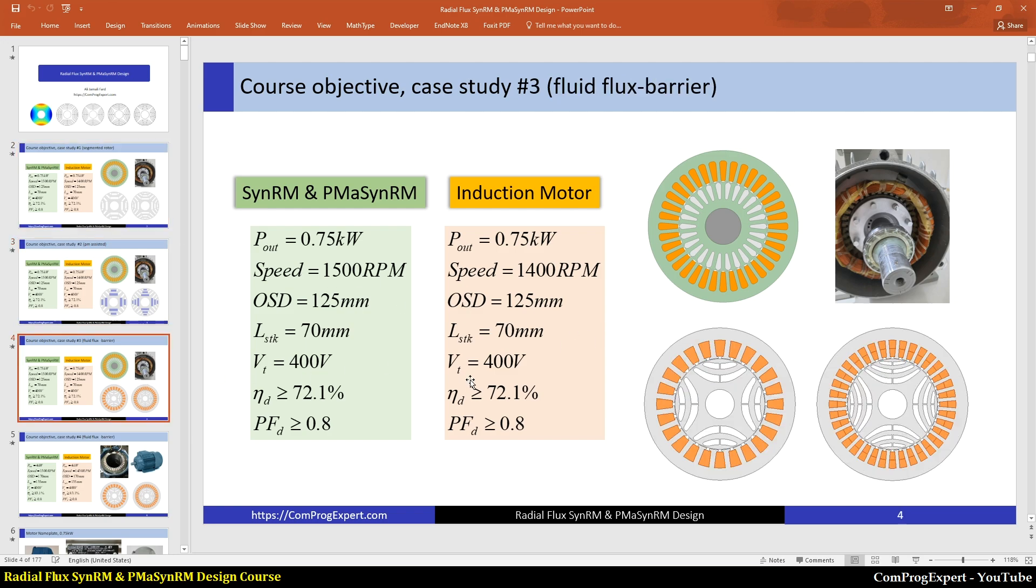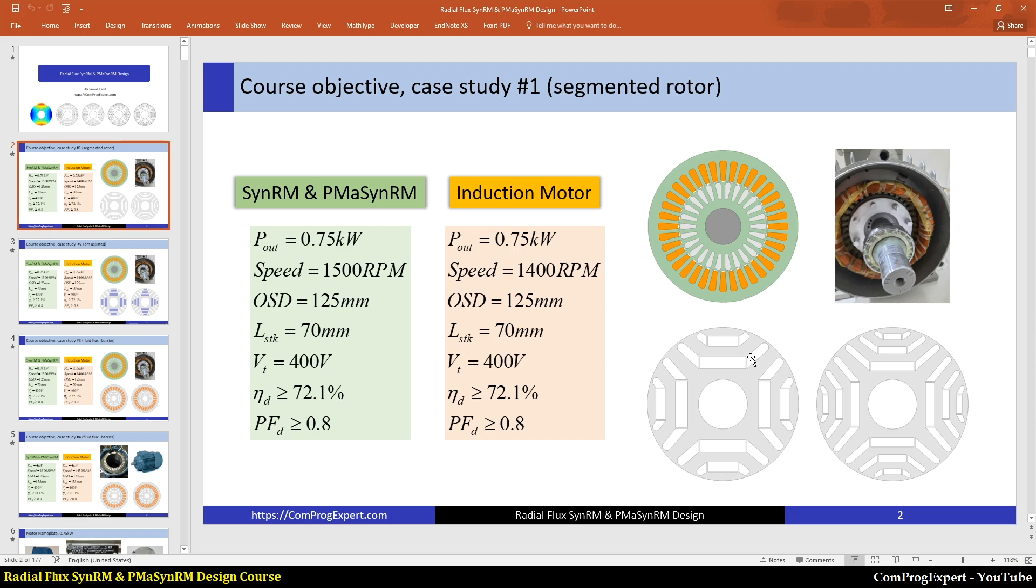In the third example, we will consider the same induction motor, but the rotor core is designed considering fluid flux barriers. So we will compare this geometry, the saliency ratio for example, that we calculate for this rotor core, and the saliency ratio that we calculated for this rotor core and compare.